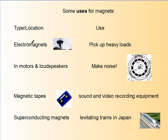There are many uses for magnets. Electromagnets can be very strong and you can see here this is picking up a large amount of scrap metal. Electromagnets are very good for picking up heavy loads. Magnets are used in motors and loudspeakers, so I guess their uses include making noise.